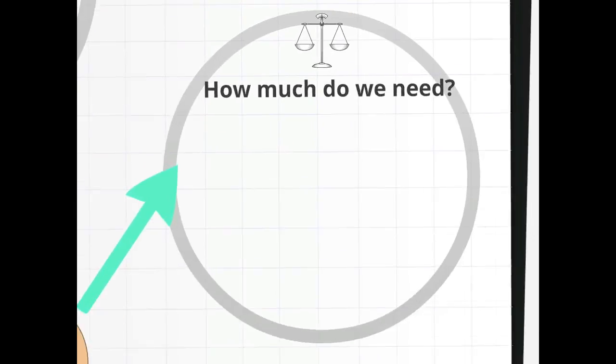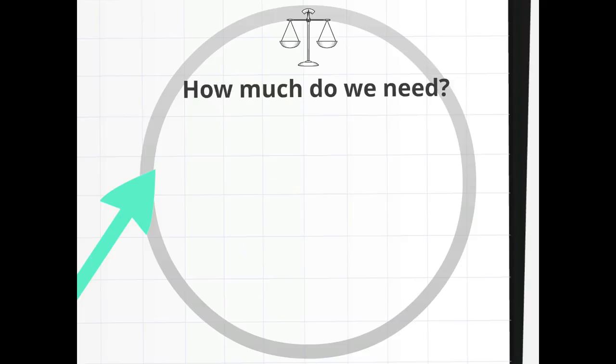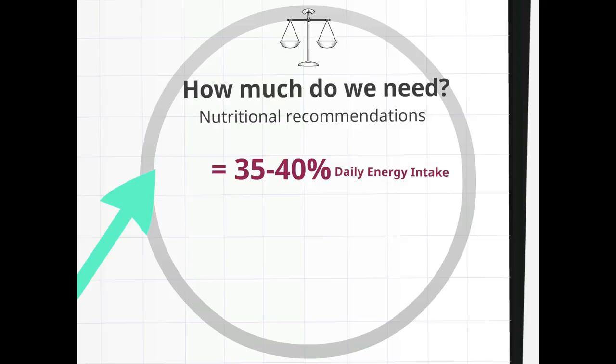How much do we need? Lipids should make up between 35 to 40% of our daily energy intake. The ratio of omega-6 to omega-3 is important in maintaining cardiovascular health and should be about 5. Altering the ratio can change the body's metabolic and inflammatory state.